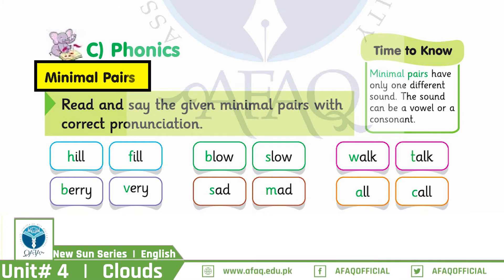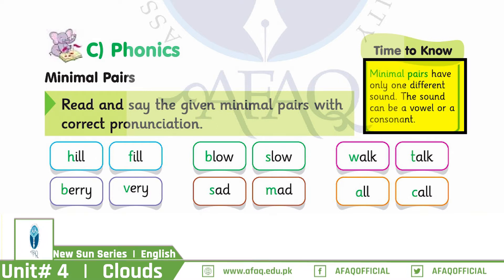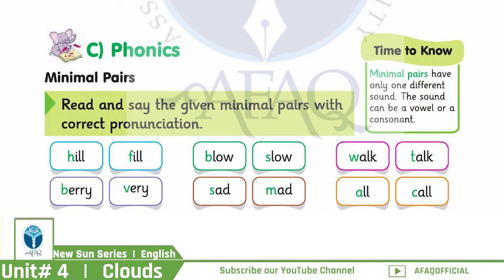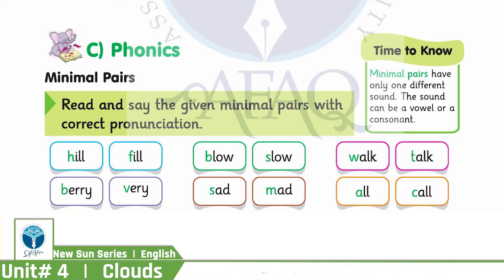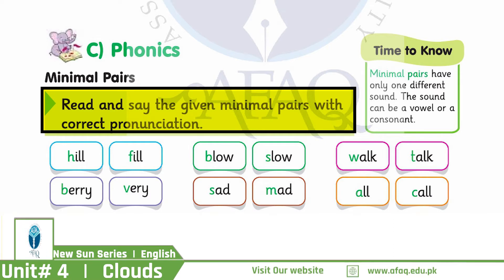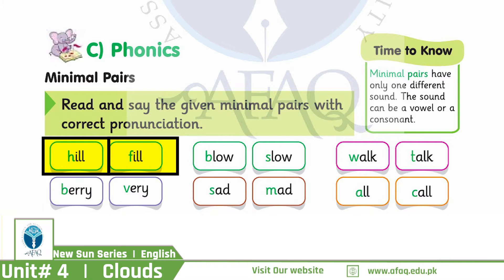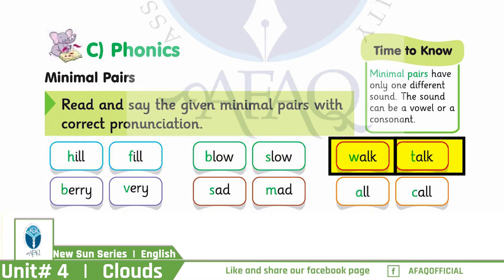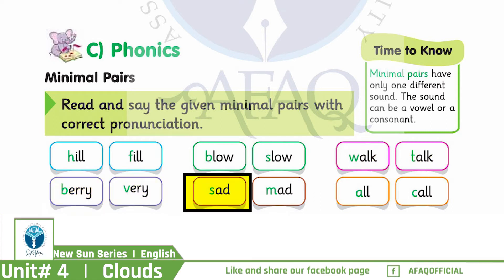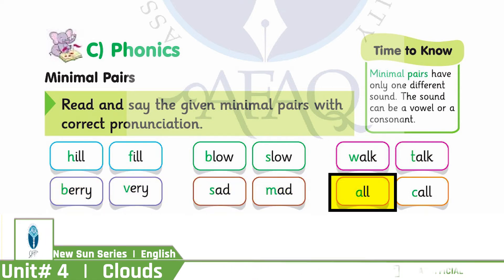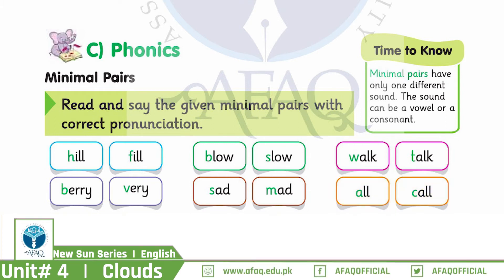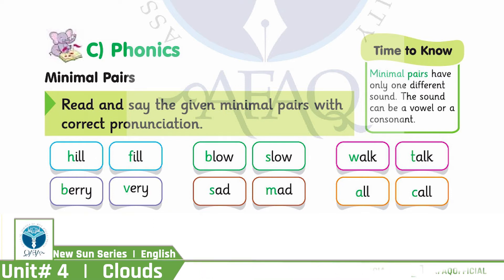Today we'll talk about minimal pairs. In minimal pairs, there are two words that have just one sound difference, such as hill and fill. Let's practice them. Read and say the given minimal pairs with correct pronunciation: hill, fill, blow, slow, walk, talk, bury, very, sad, mad, all, call. These are minimal pairs. You can write them down in your notebook and pronounce them.